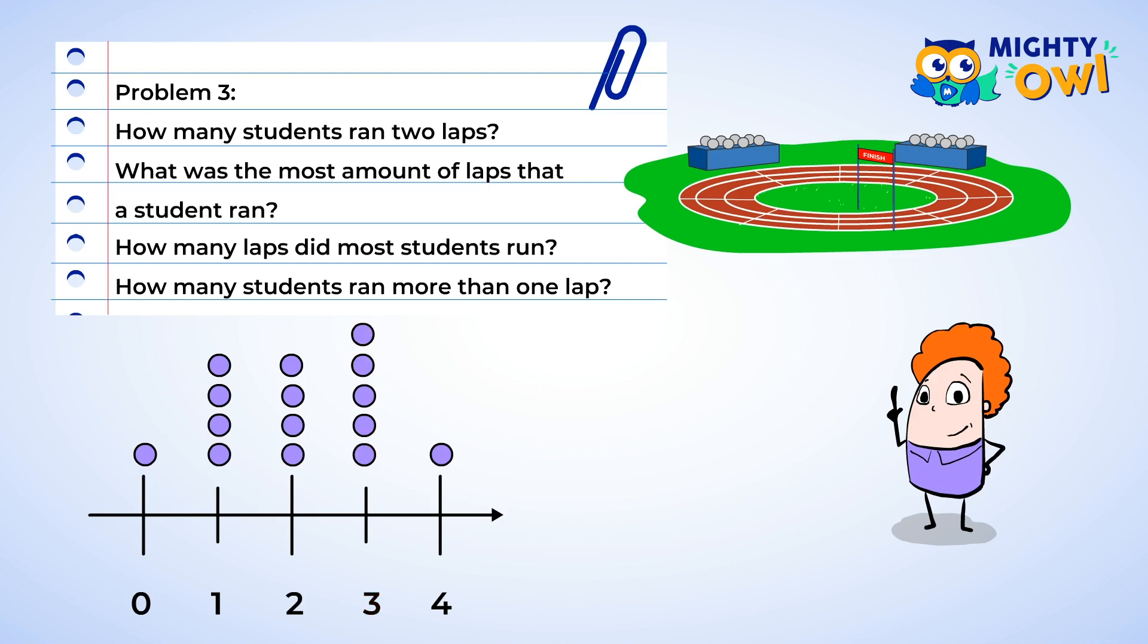How many students ran more than one lap? This one's a little harder. But we can do it! More than one lap would mean they ran either two, three, or four laps. Well, there are four students who ran two laps, five students who ran three laps, and one student who ran four laps. Now we need to find the total by adding those numbers up. Four plus five is nine. Nine plus one is ten. So ten students ran more than one lap.